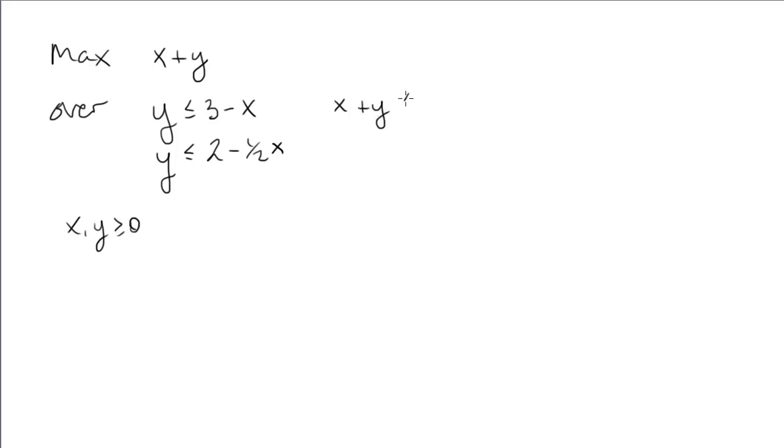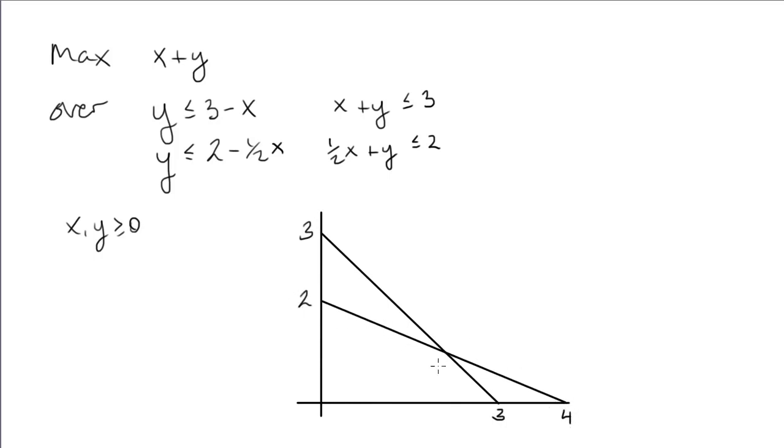Rewrite into the canonical form and look at the geometry. The shaded area is our constraint set.